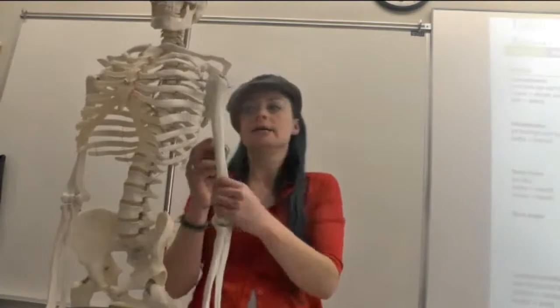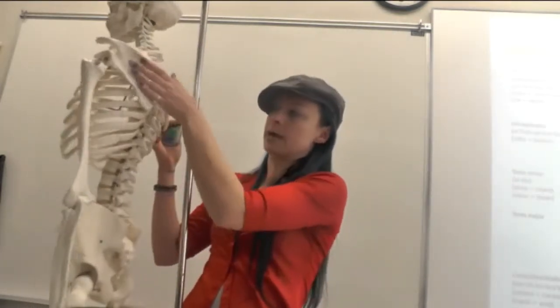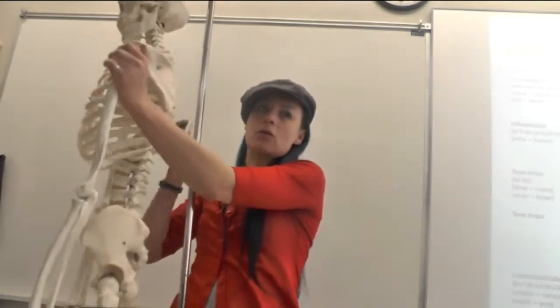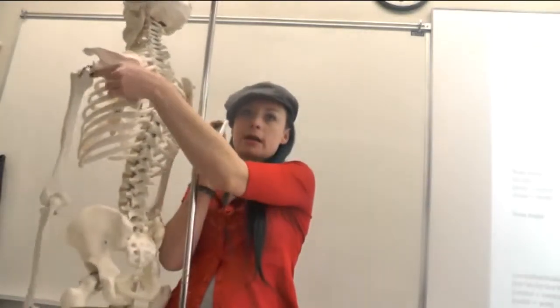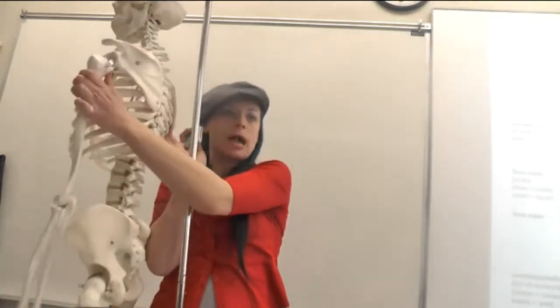For infraspinatus, this is going to be the one that sits here in your infraspinous fossa, and it's the lateral rotator. So it inserts over here on your humerus, and when it pulls, it pulls you laterally.